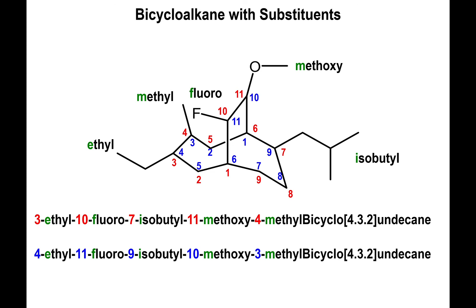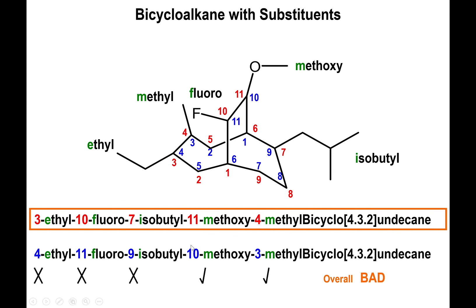Since this is just an alkane with no functional group to act as a tiebreaker, it comes down to comparing substituent locants between the two numbering schemes. Comparing the red series to the blue series: three vs. four — bad for blue; ten vs. eleven — neutral; seven vs. nine — bad for blue; eleven vs. ten — good for blue; and four vs. three — good for blue. We end up with three bad and two good for blue overall, so the red numbering scheme wins.